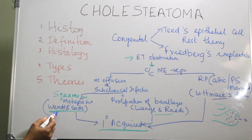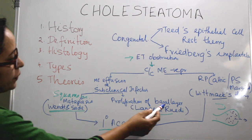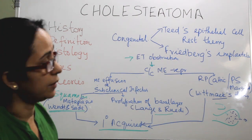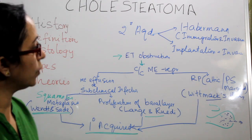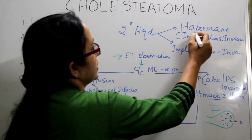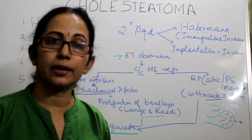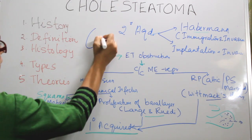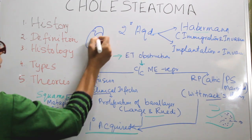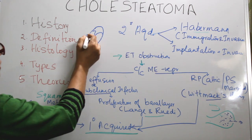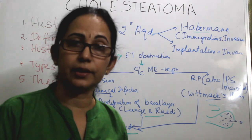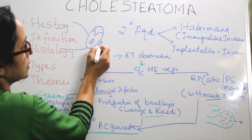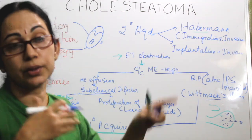In summary, the theories for primary acquired cholesteatoma are: squamous metaplasia theory by Sade; proliferation of the basal layer by Lange and Rudy; and invagination and invasion theory by Wittmaack. For secondary acquired cholesteatoma, Habermann's theory applies — cholesteatoma occurs secondary to a tympanic membrane perforation, where squamous epithelium from the external auditory canal or superficial tympanic membrane migrates through the perforation and invades the middle ear cleft.